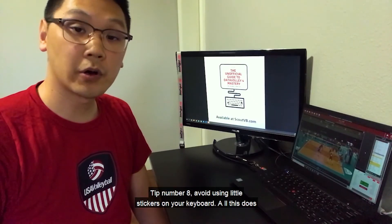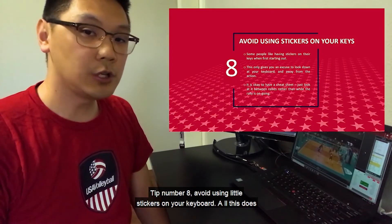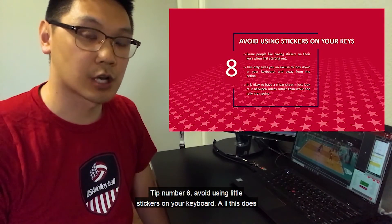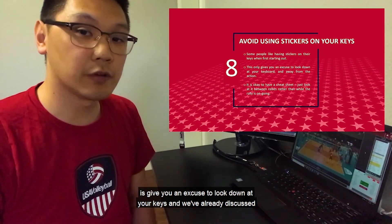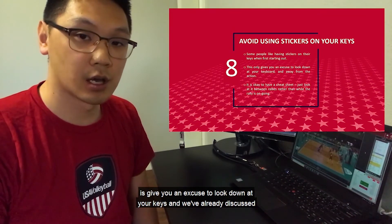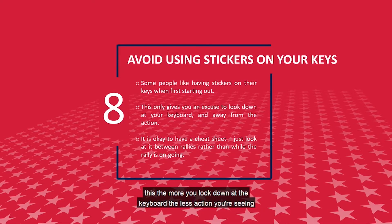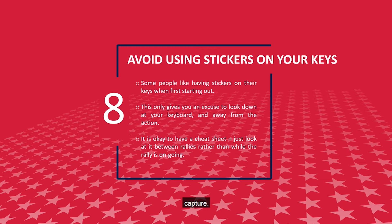Tip number 8: avoid using little stickers on your keyboard. All this does is give you an excuse to look down at your keys. And we've already discussed this — the more you look down at the keyboard, the less action you're seeing on the floor, and the less action we see on the floor, the less we can actually capture.